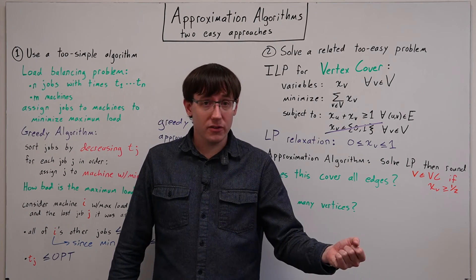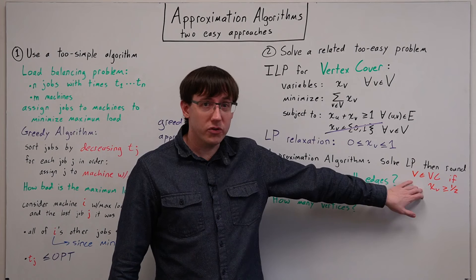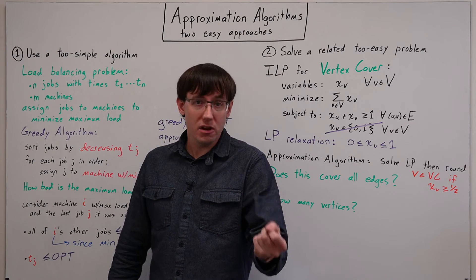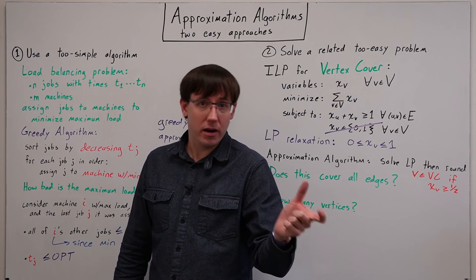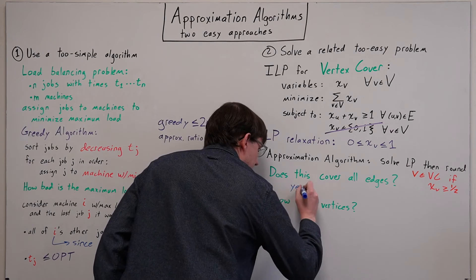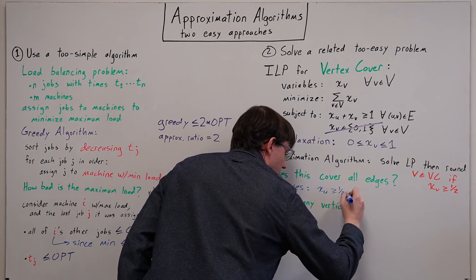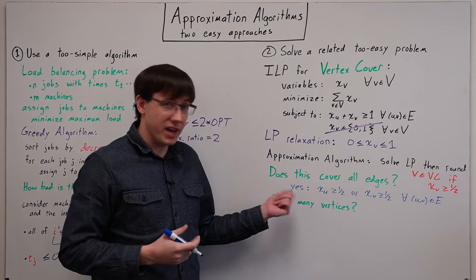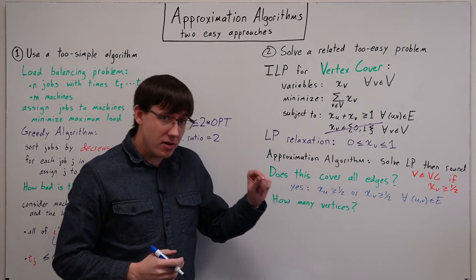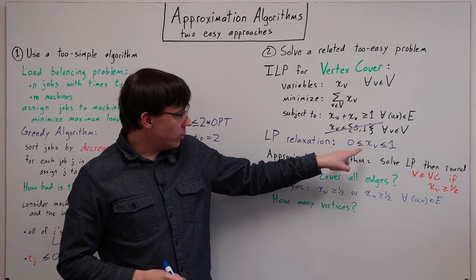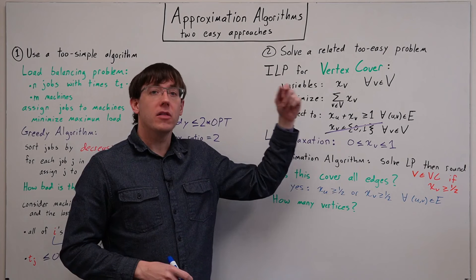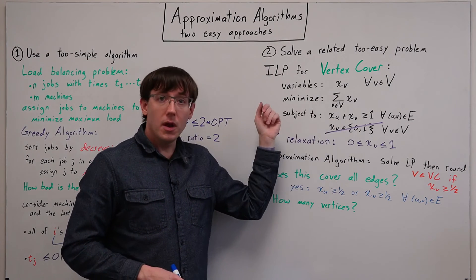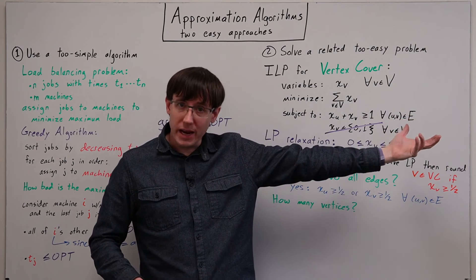And the first question to ask is whether this rounding procedure actually gives us a valid vertex cover — does it give us at least one end of every edge? And the answer is yes. If we have a solution to the linear program, then we know the values for all of the variables must satisfy all of the constraints.